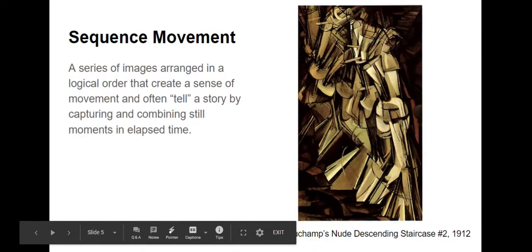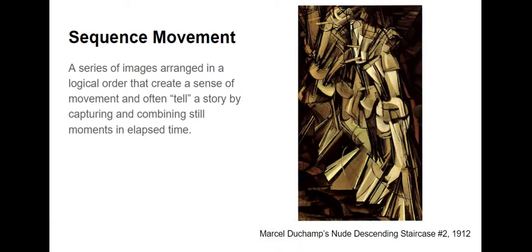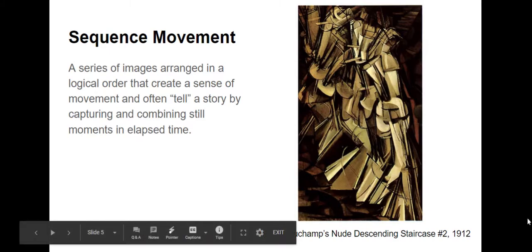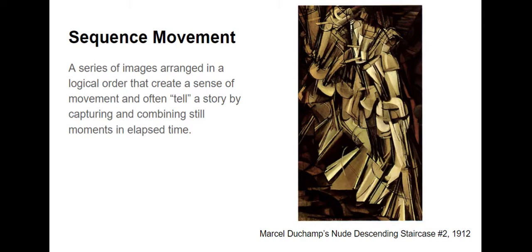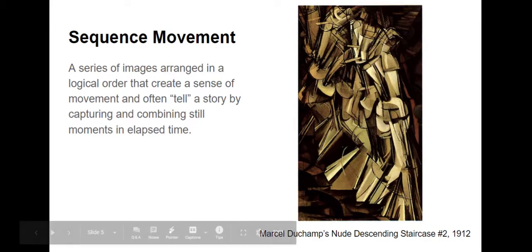In sequential movement, a series of images are arranged together in an order that makes it look like you're seeing the progression of time in a static image — static meaning it's not actually moving. In this example, called Nude Descending Staircase, you have multiple overlapping, almost frames of this cubist-like drawing of a human figure coming down the stairs. The ones that look furthest away tend to be a little bit darker in value, making them look more past tense, while the figures move progressively towards the bottom right corner, creating the illusion that they are descending or walking down the staircase.